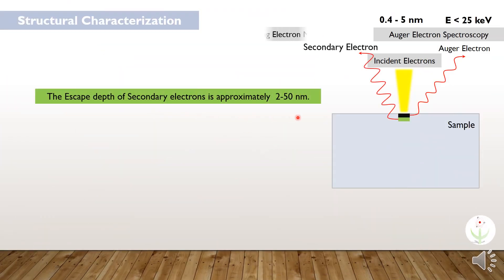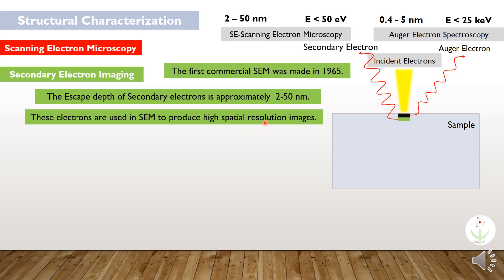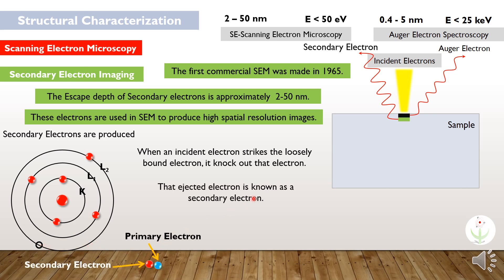The escape depth of secondary electrons is approximately 2 to 50 nanometers and they have energy less than 50 electron volts. These secondary electrons are used in scanning electron microscopy to produce high spatial resolution images. The first commercial scanning electron microscope was made in 1965. These secondary electrons are produced when an incident electron strikes the loosely bound electron and knocks it out. This ejected electron is known as secondary electron.